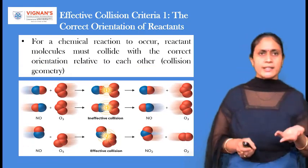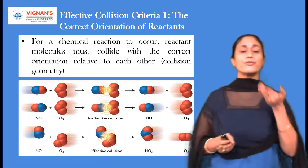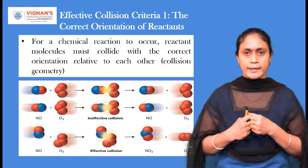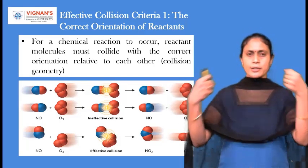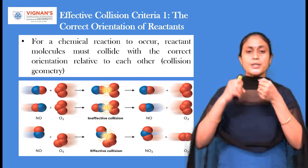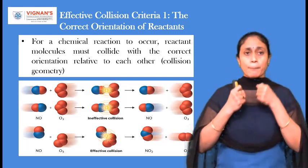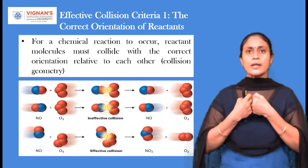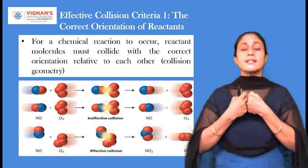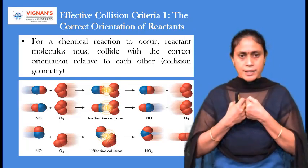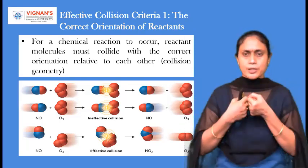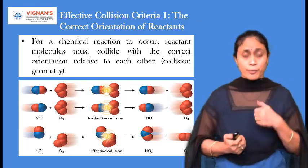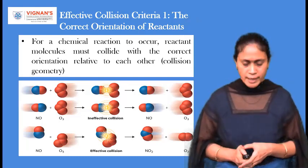The first and foremost criterion for a fruitful chemical reaction is the correct orientation of the reactants. When the reactants collide with one another, they should orient in a proper way. If they collide in a proper orientation, it will result in a fruitful chemical reaction. When two reactants collide in an improper orientation, a fruitful chemical reaction will not take place.